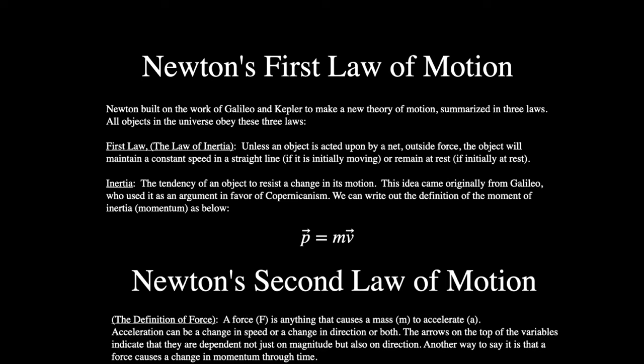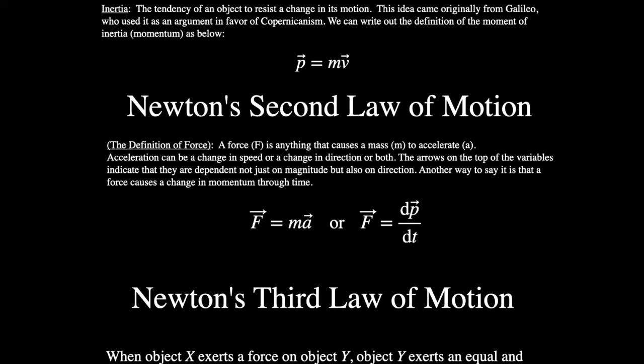That is called an inertial reference frame, and you can think of it as centered on the mass you're talking about. An inertial reference frame will follow the mass if it's at rest or if it's moving at a constant velocity in one direction — that is the nature of inertia. We can define inertia with P equals MV — that's momentum — and this momentum is what's going to change with the second law of motion.